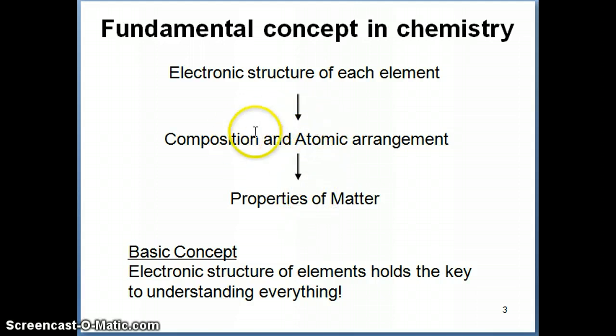Now, what's more important from here is that it turns out that it's the electrons in the atoms that determines how these atoms are arranged and the type of atoms that will make up that molecule. So the basic concept, again, in chemistry, as I mentioned in Chapter 1, is that the electronic structure of the elements really holds the key to understanding everything.